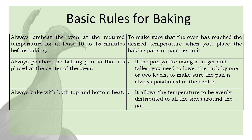Always position the baking pan so that it's placed at the center of the oven. If the pan you're using is larger and taller, you need to lower the rack by one or two levels to make sure the pan is always positioned at the center. Always bake with both top and bottom heat, which allows the temperature to be evenly distributed to all sides around the pan.